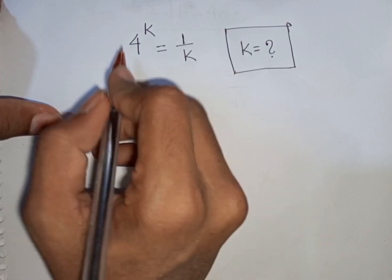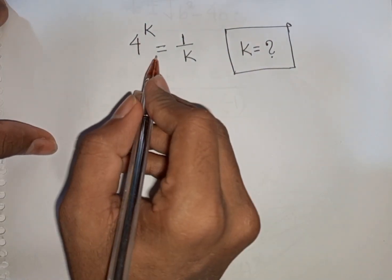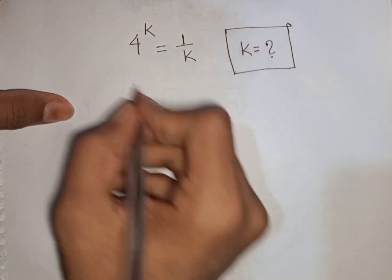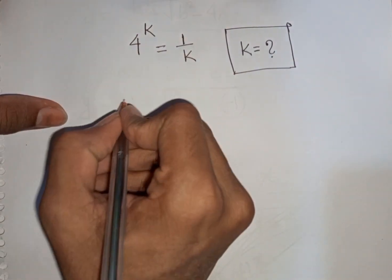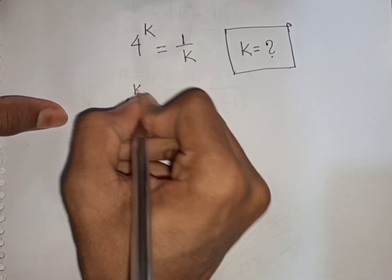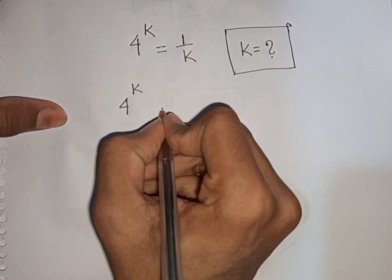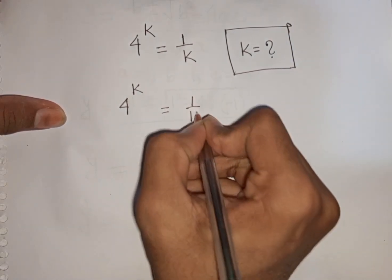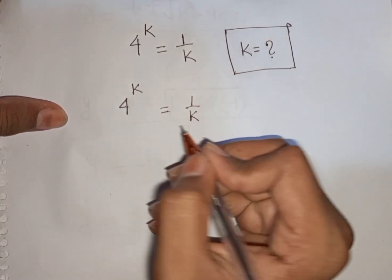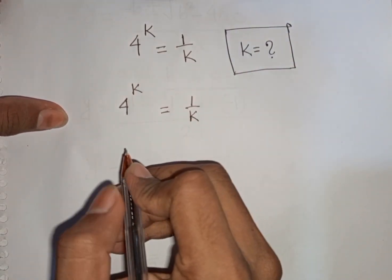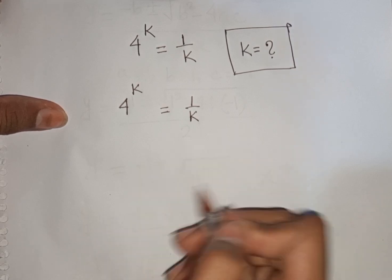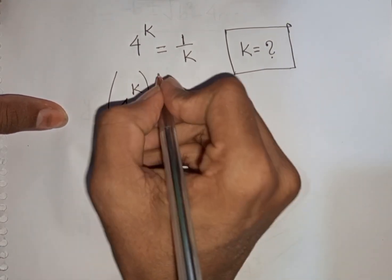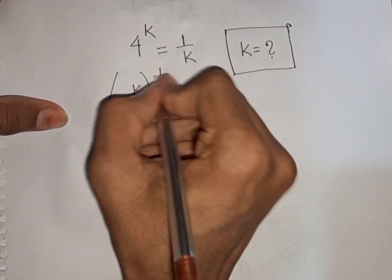How to solve 4 power k is equal to 1 by k — find the value of k. So we have 4 power k is equal to 1 by k. Now we multiply by power of 1 by k on both sides.